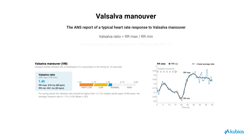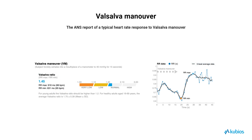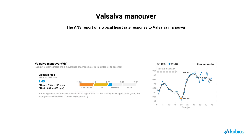To improve precision, the ratio is computed using 5-beat average values for both the longest and shortest intervals. In QBOs HRV software, the Valsalva ratio is presented using a 4-zone model based on reference values for healthy adults. The zones are very low, low, normal, and high. A Valsalva ratio within the very low zone is considered abnormally low for healthy adults across all age groups. Younger adults, specifically those under 40 years of age, are expected to exhibit Valsalva ratios within the normal or high zones.